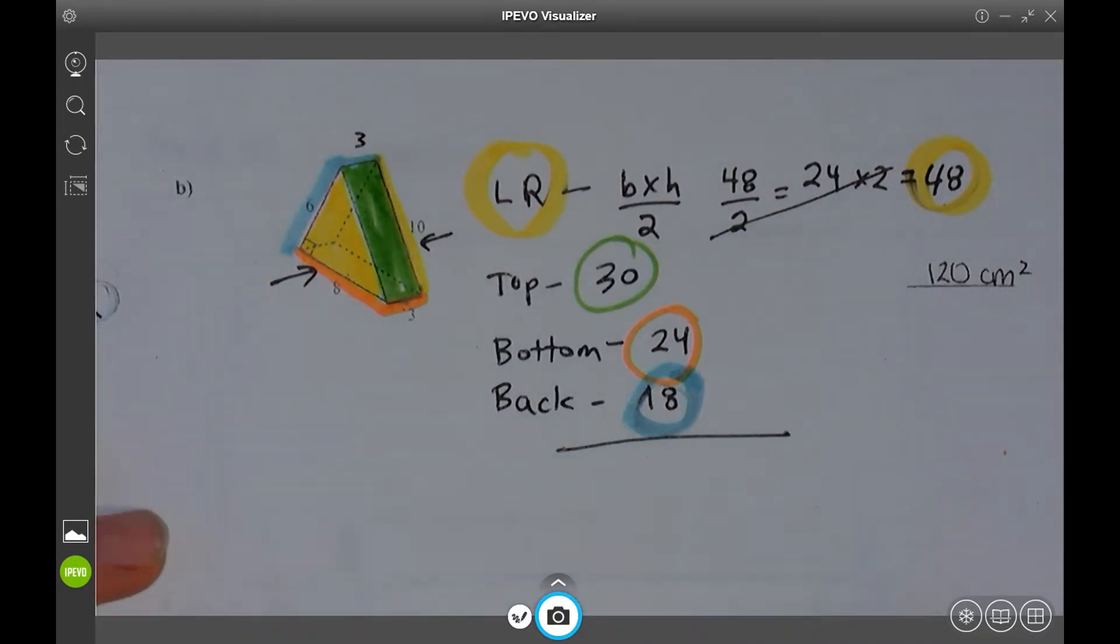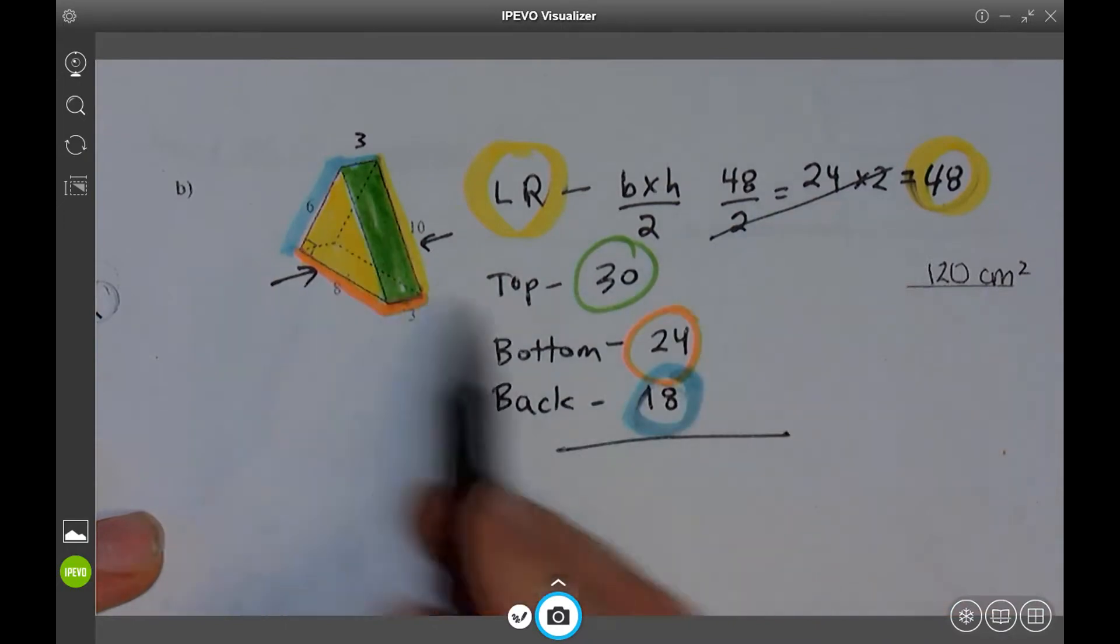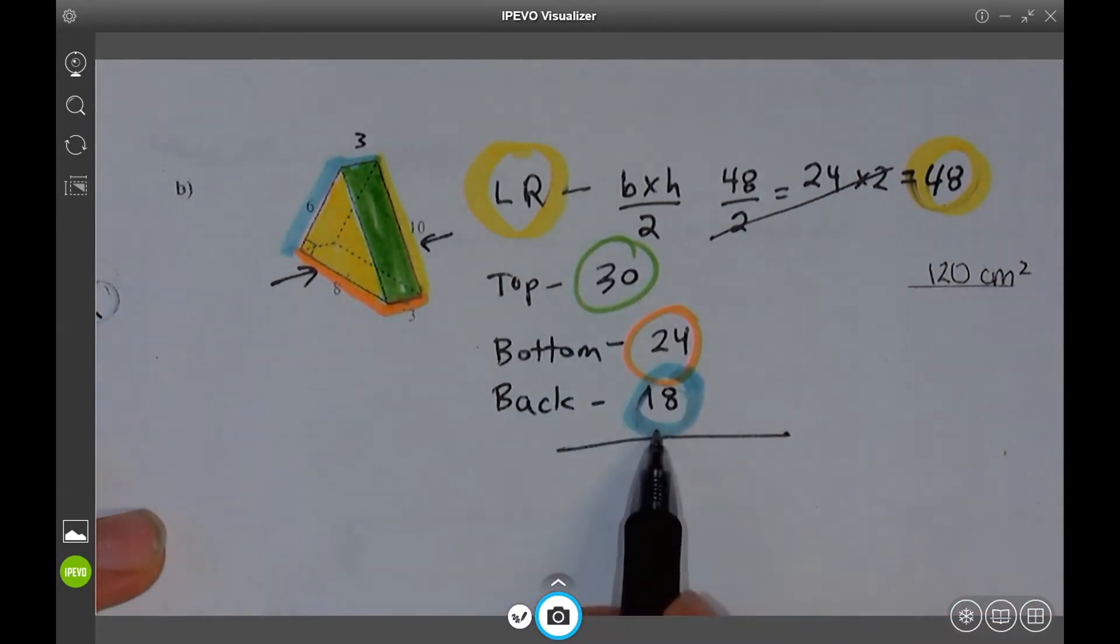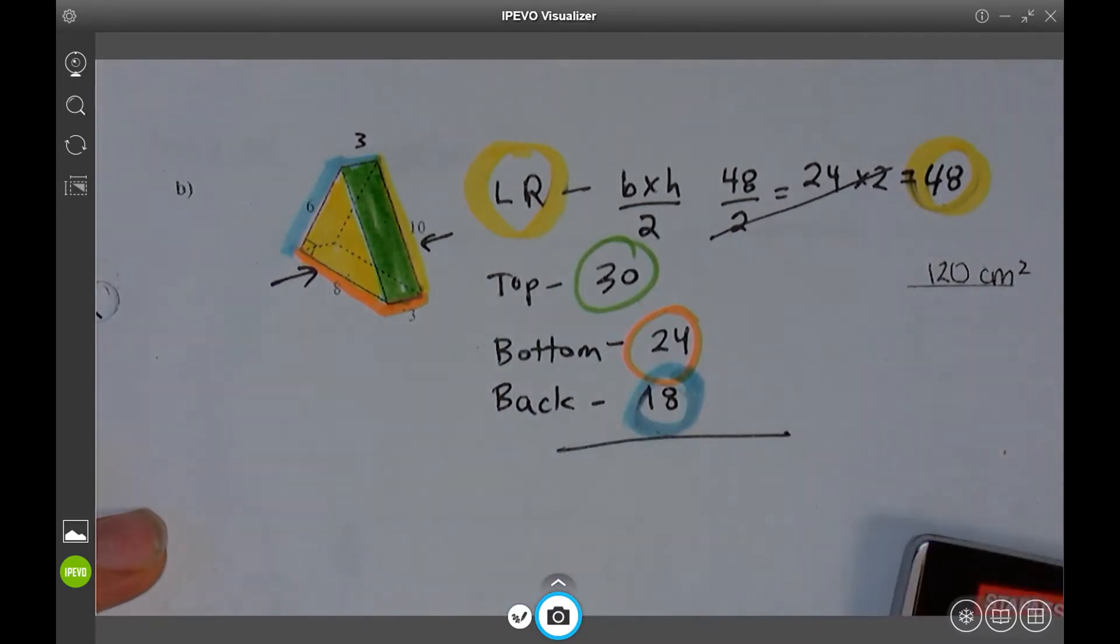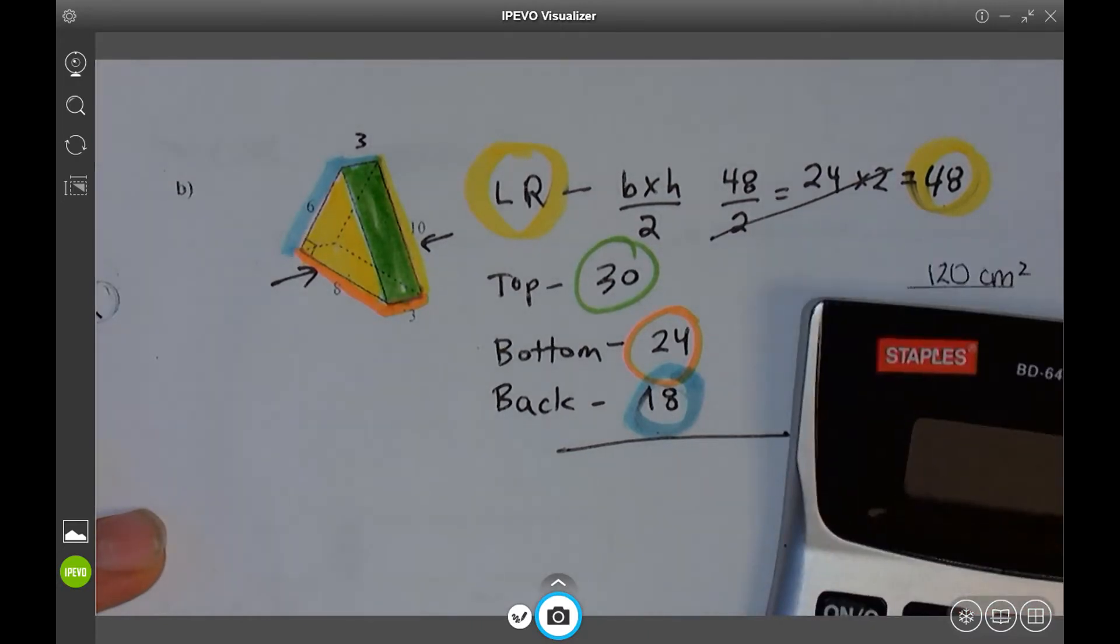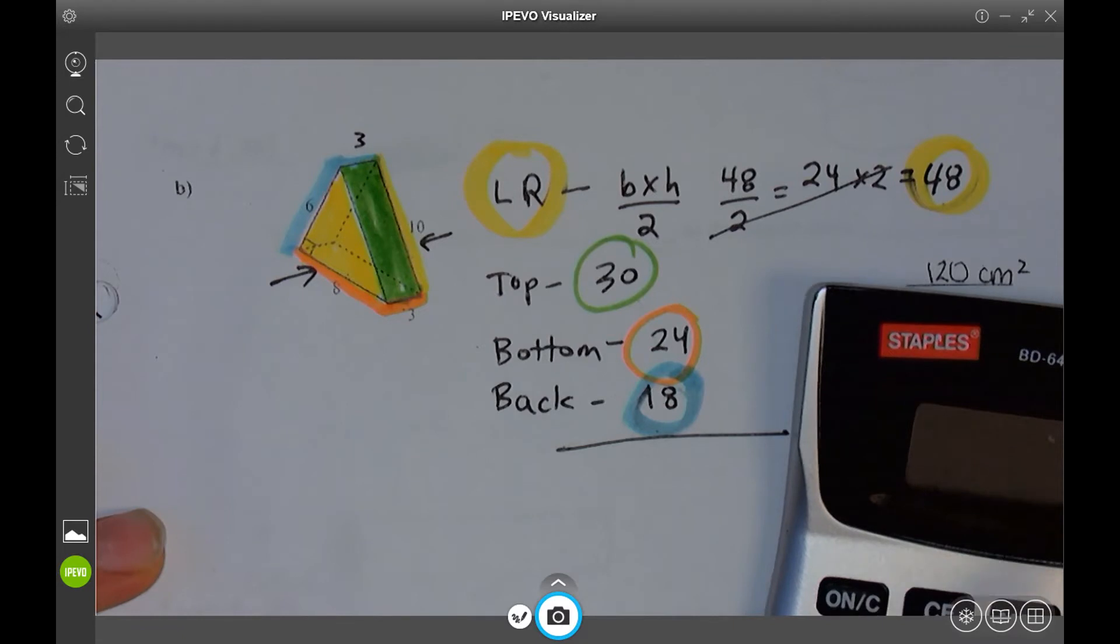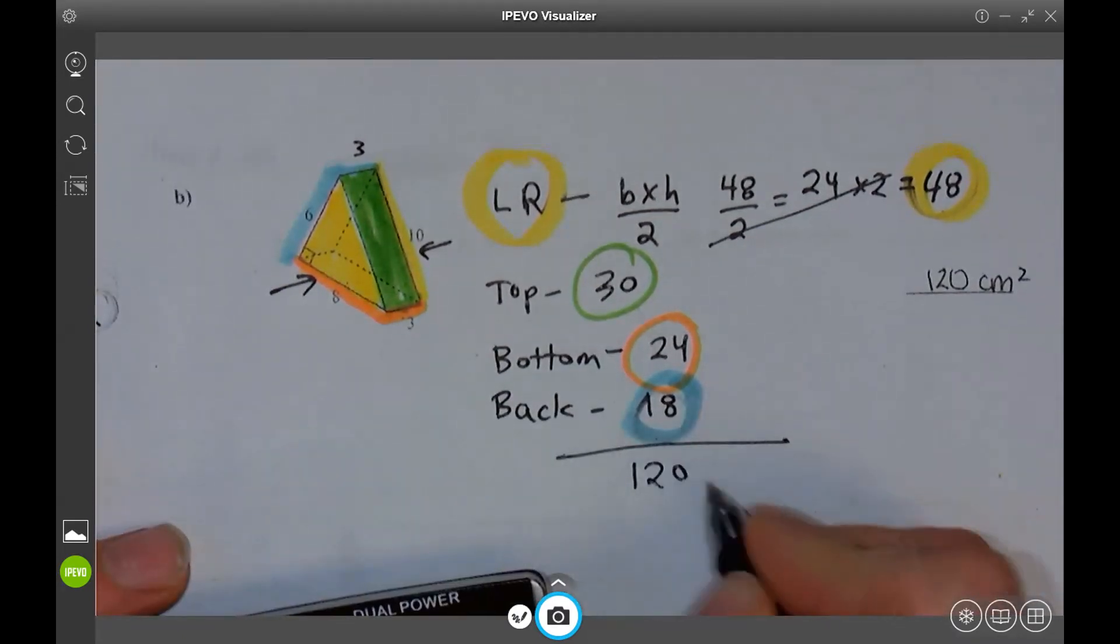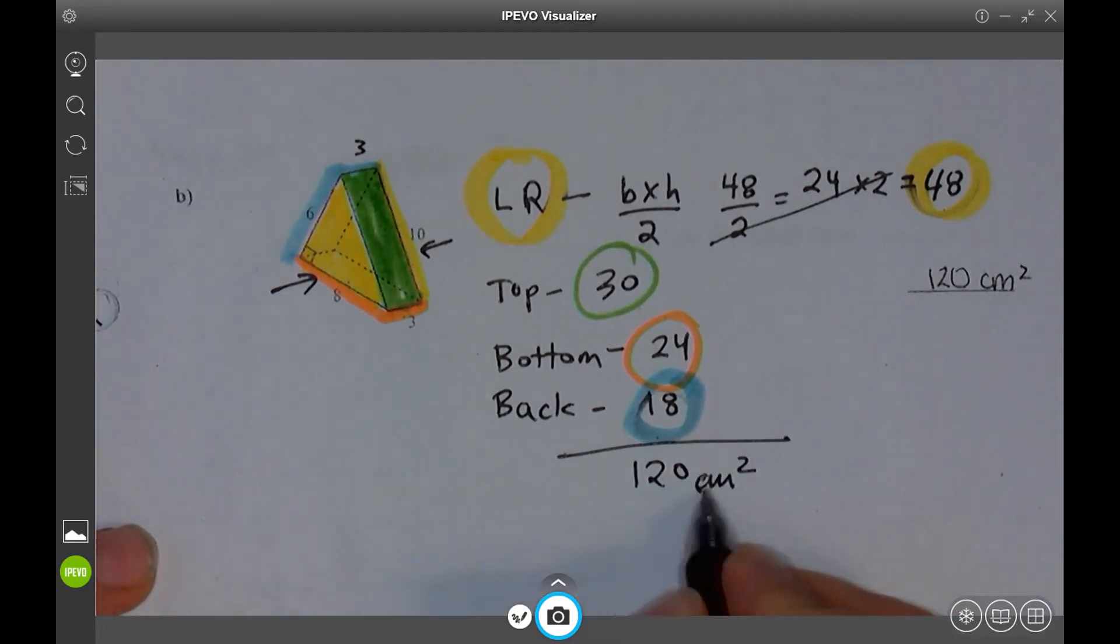So now that I have my left and right yellows, my top, my bottom, and my 18. Once again, I have three faces and one pair of faces. So this was the pair and three faces. I add all of those up to get the final response, and it should be 120, which is what my answer should be. Centimeters squared.